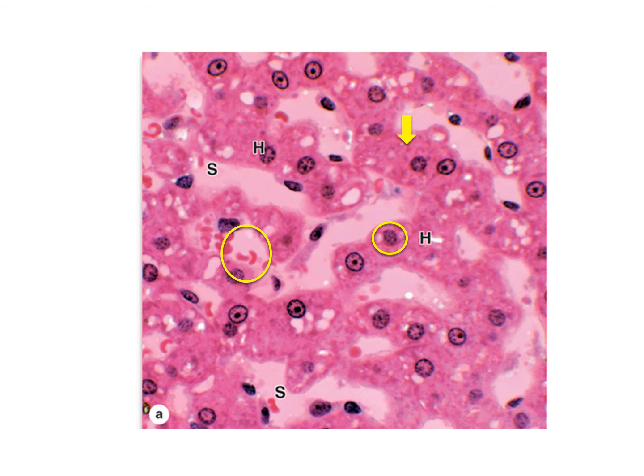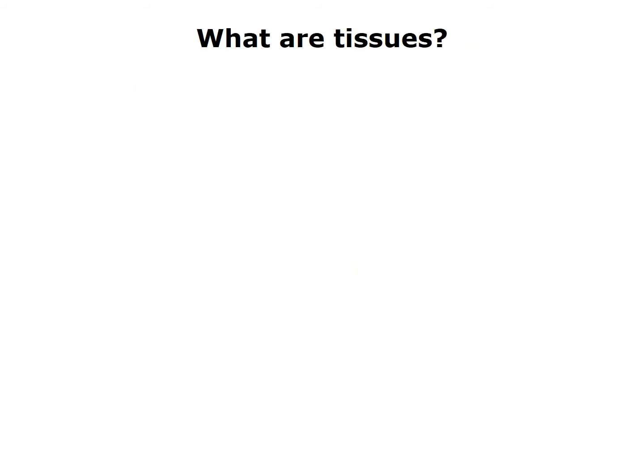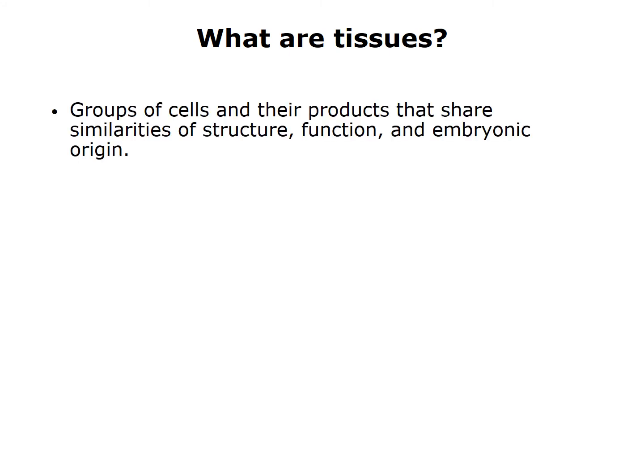Now that you have an idea how slides are prepared, let's go back and consider the nature of tissues. A formal definition is that tissues are groups of cells and the products they produce that share similar structures, functions, and in some cases, embryonic origins. Histologists have determined that there are only four tissues found in the body. You'll better understand what tissues are as we study each one over the next several weeks and then look at the organ systems in turn.